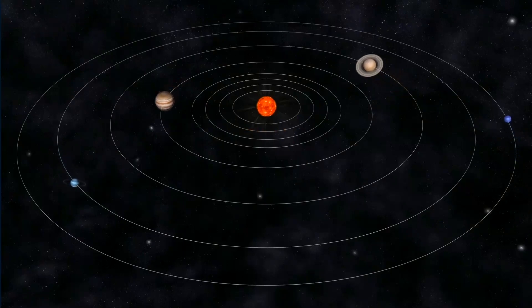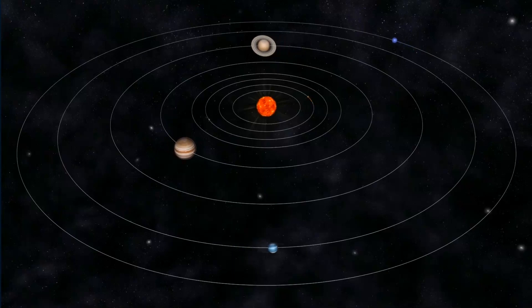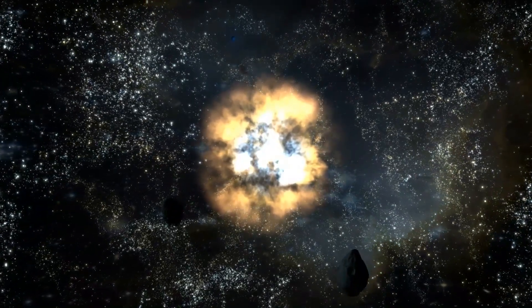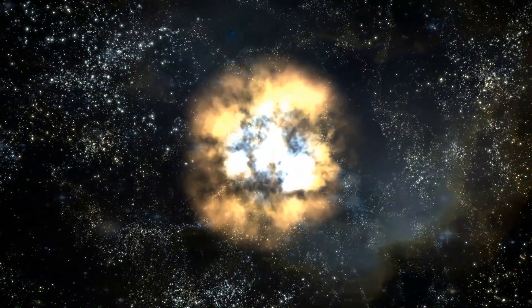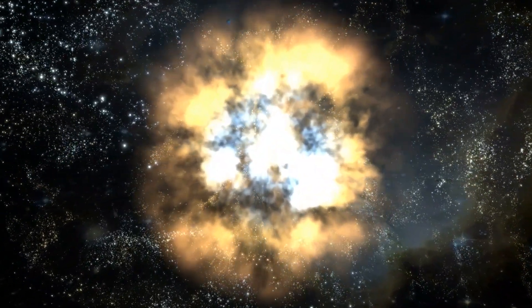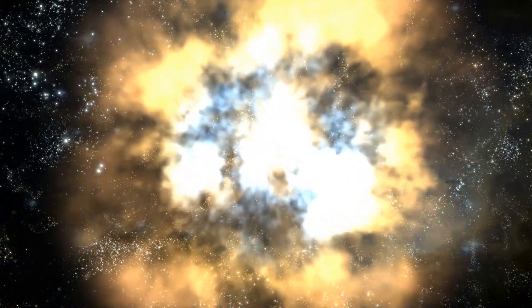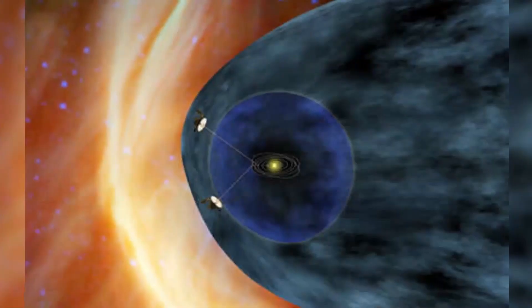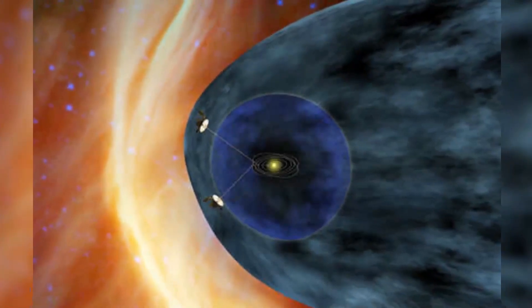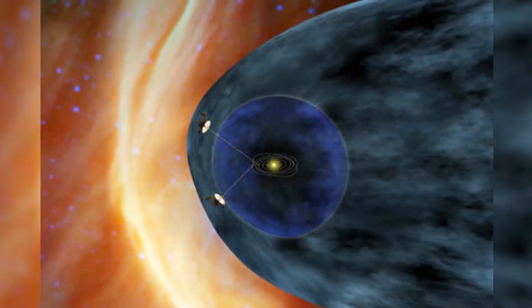Four years ago, the Voyager 2 probe became just the second human-made object in history to exit the solar system and officially enter interstellar space. On November 5, 2018, the craft officially left the solar system as it crossed the Heliopause, the boundary that marks the end of the heliosphere and the beginning of interstellar space. This area is the outermost region of the solar system, sometimes referred to as the Bubble, and is located around 119 astronomical units from the Sun.